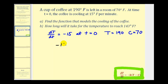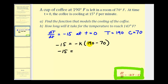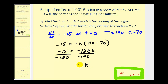So we want to solve the equation: negative 15 is equal to negative K times the quantity T minus C, which would be 190 minus 70. So here we have negative 15 is equal to negative 120K. So we have K is equal to 1/8, or 0.125.